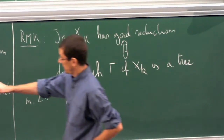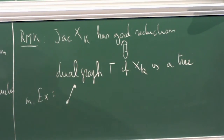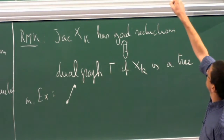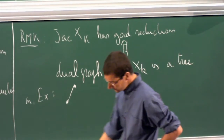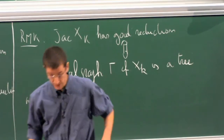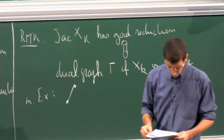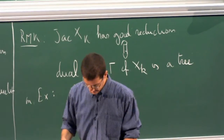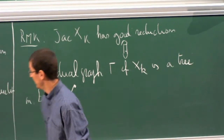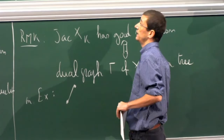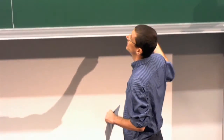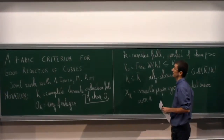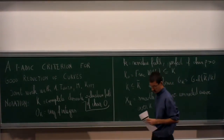So to get a criterion for whether the special fiber of X is smooth or not, we need some finer information than what is contained in the first étale homology. This problem was already considered by Takayuki Oda, who addressed exactly this question.